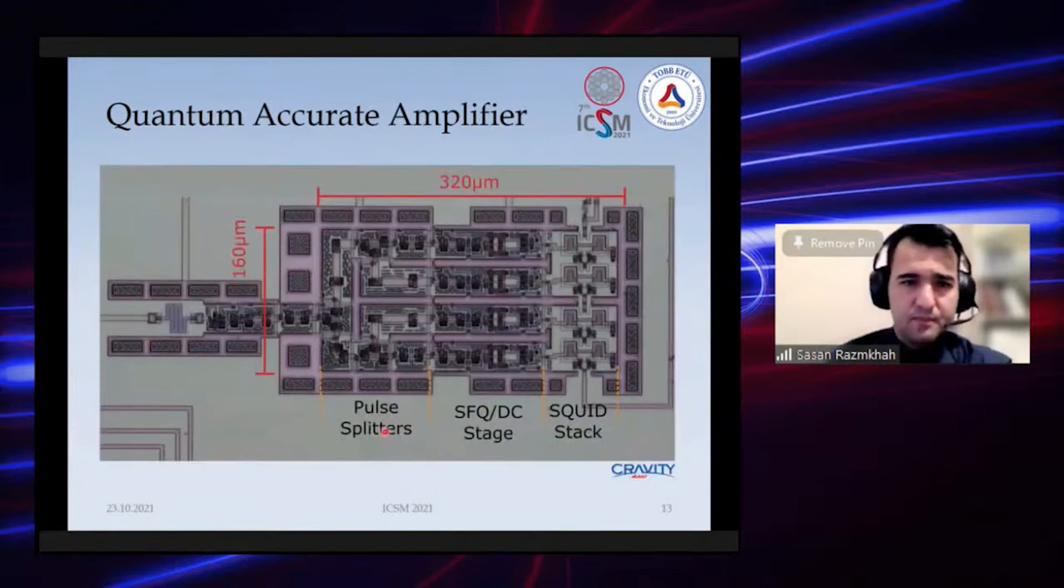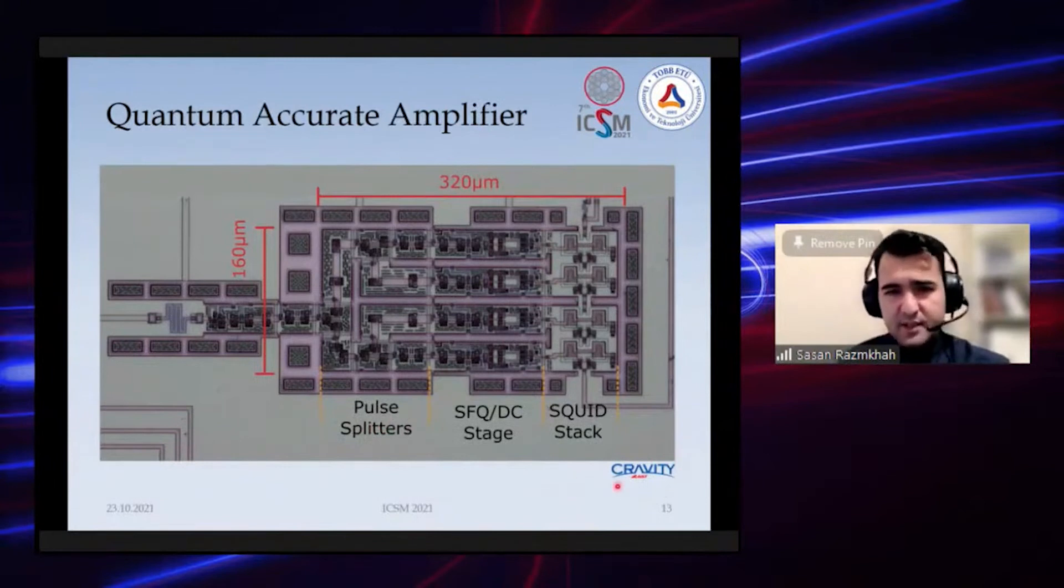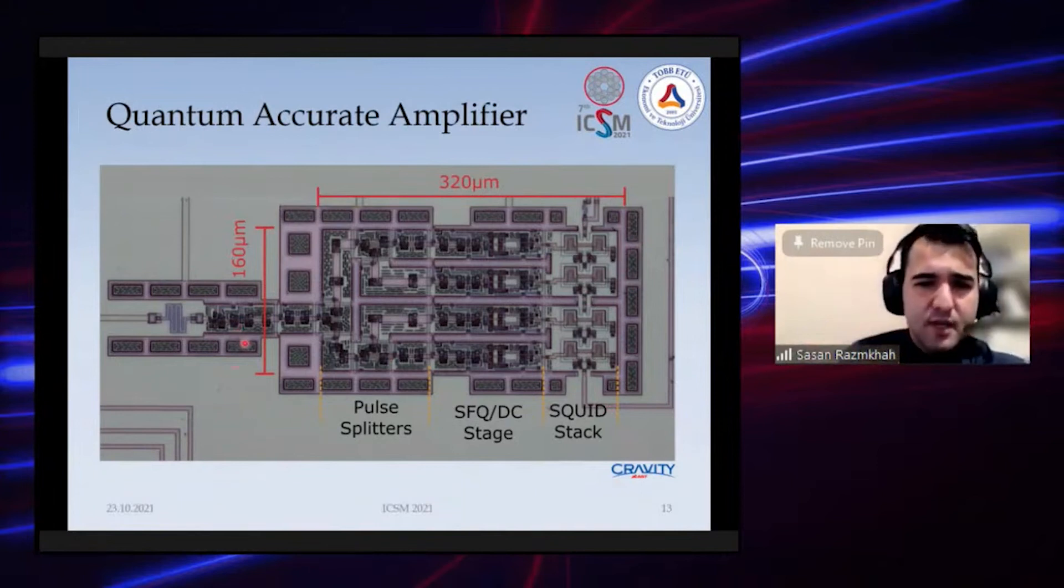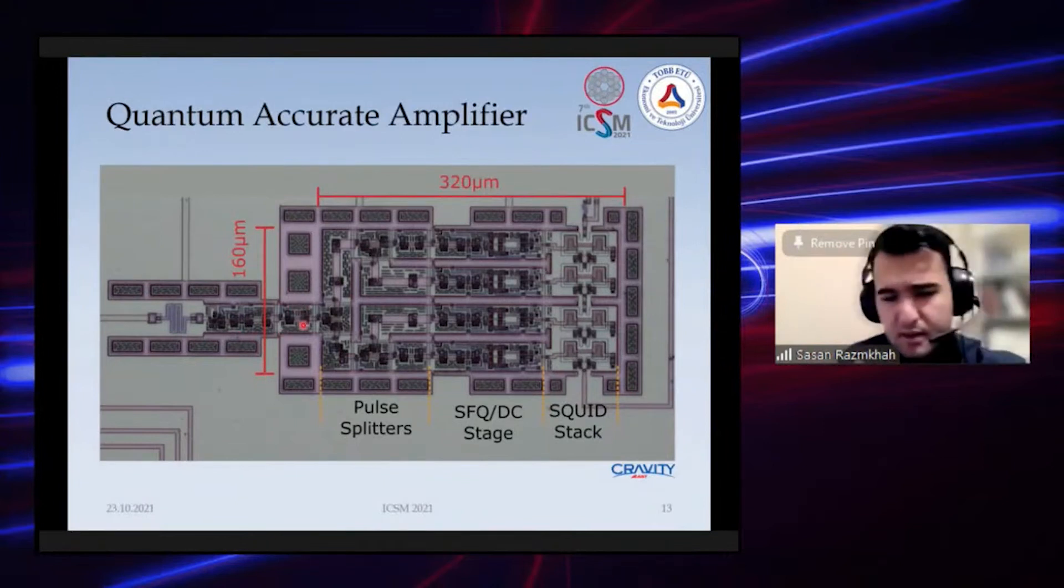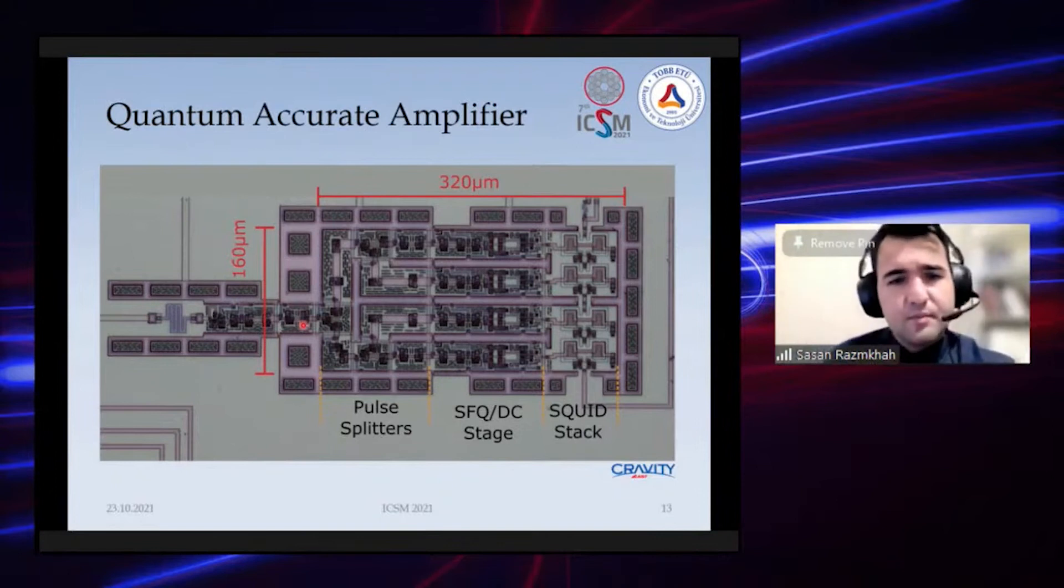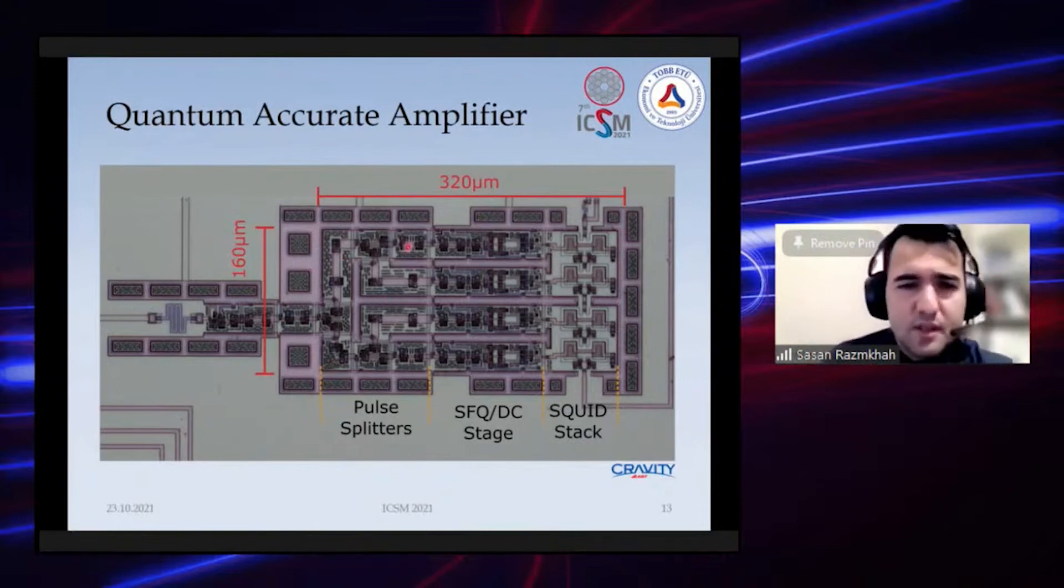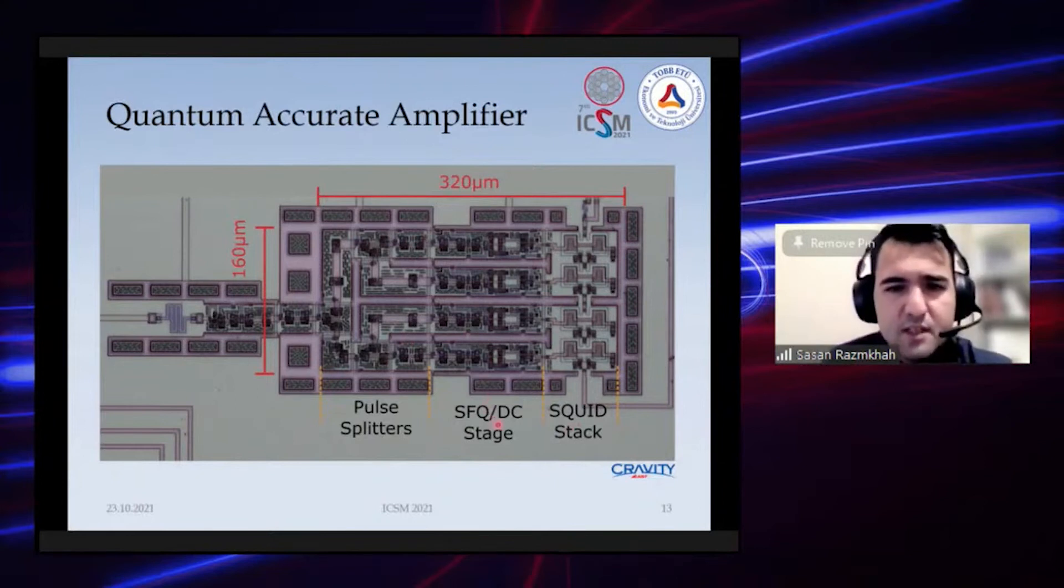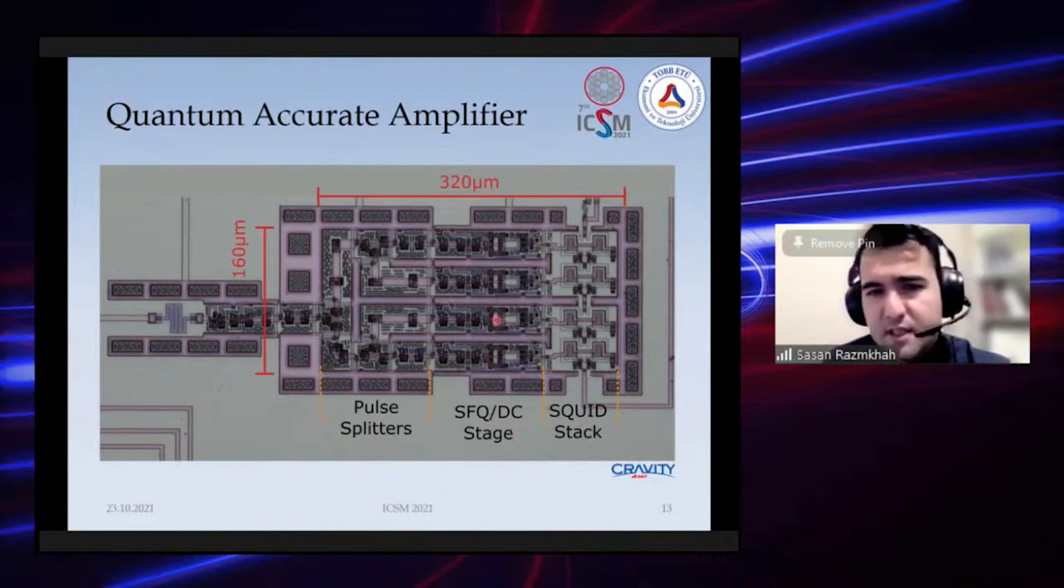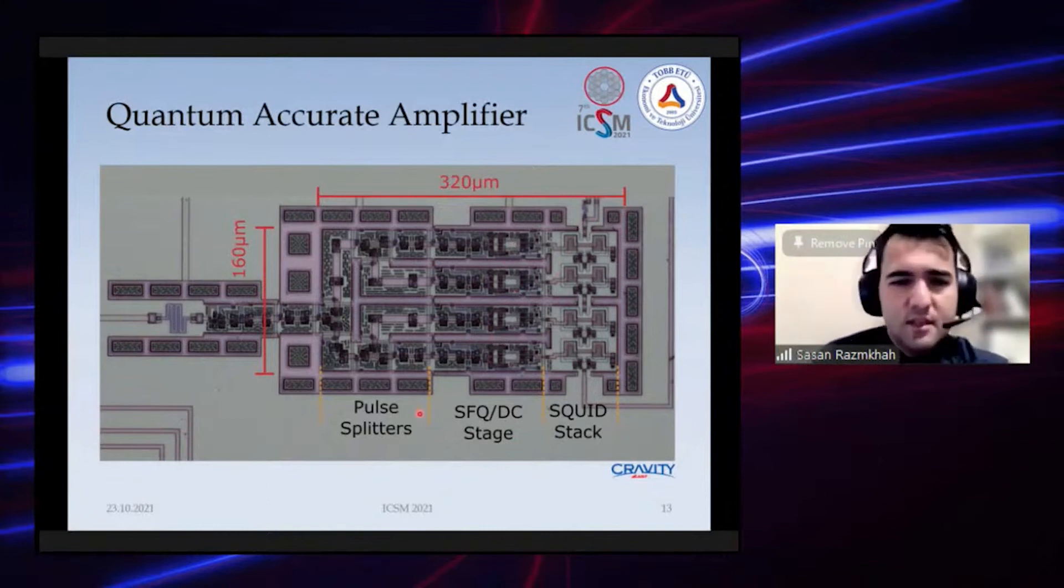This is the fabricated circuit—fabrication was done at Tokyo AIST. It's the size of the four-stage amplifier. As you can see it's not very small compared to CMOS technology, but it's really good for RSFQ. These are basically S3 splitters that we use for increasing the energy or number of our pulses, then fed to a modified SFQ DC stage. After that we have a stack of SQUIDs which is matched with these SQUIDs inside the SFQ DC.